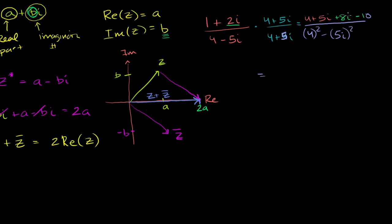And so this is going to be equal to 4 minus 10. Let's add the real parts. 4 minus 10 is negative 6. 5i plus 8i is 13i. Add the imaginary parts. And then you have 16 minus 5i squared. Well, 5i squared, i squared is negative 1. 5 squared is going to be negative 25. The negative and the negative cancel out. So you have 16 plus 25. So that is 41.